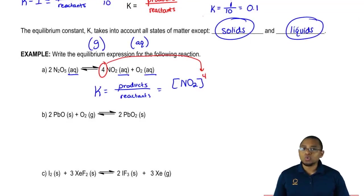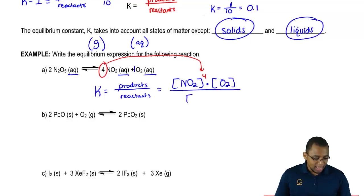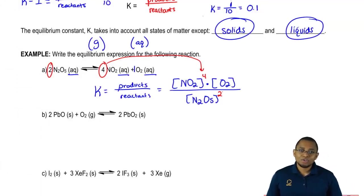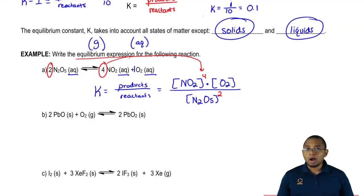So it's going to be NO2 to the 4 times O2. O2 just has a coefficient of 1 in front of it which we don't have to show, divided by N2O5. Again, the coefficient in front of N2O5 is 2, so that becomes a power. So we would say that this represents our equilibrium expression or our equilibrium equation. Same thing.